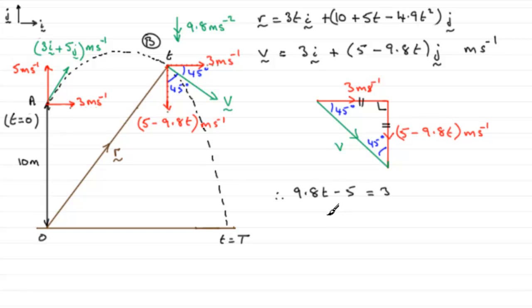So all we need to do now to work out T is just rearrange this equation. So if we were to add 5 to both sides, it would give us 3 and 5 is 8, and divide by 9.8, you'll have T equals 8 divided by 9.8. And you could work this out as an exact fraction. It would come out as 40 over 49, and that would be measured in seconds. So as an exact value, 40 over 49 seconds.